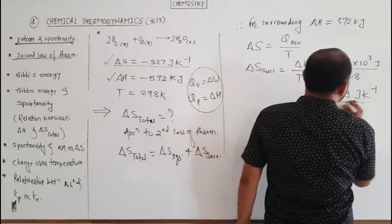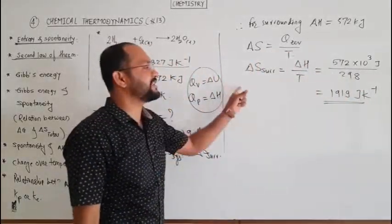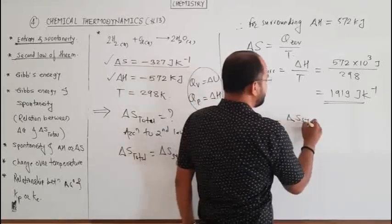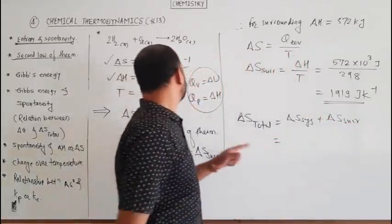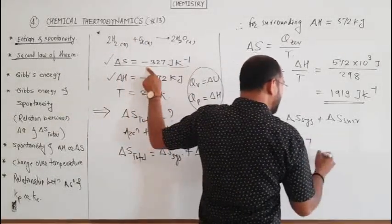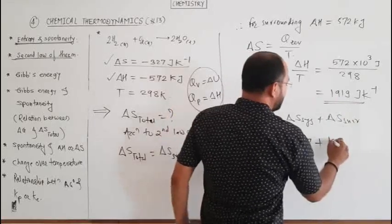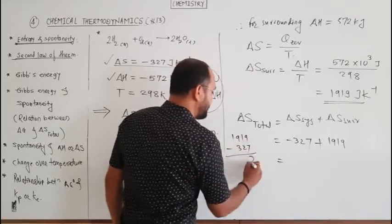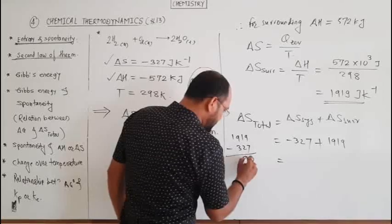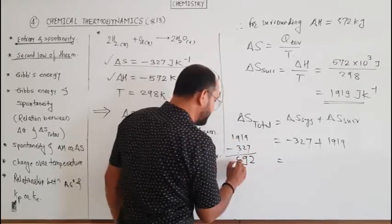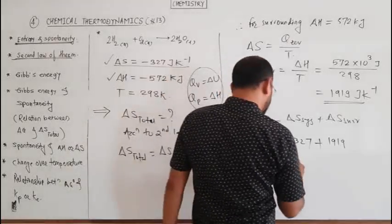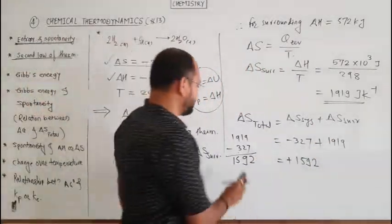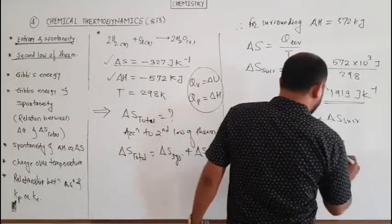So delta S surrounding equals 1919 joule per kelvin. Therefore, delta S total = delta S system + delta S surrounding = minus 327 + 1919 = plus 1592 joule per kelvin. Since delta S total is positive and greater than zero, this confirms the process is spontaneous according to the second law of thermodynamics.